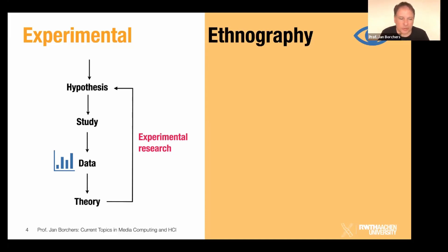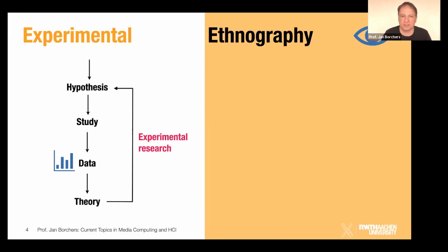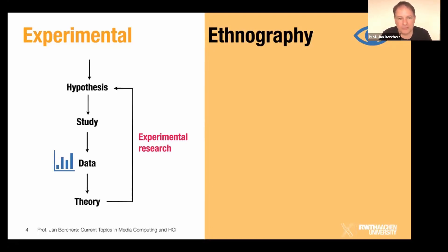That's your experimental approach — you run your study with your prototype, or maybe you don't have to build something because you're studying something that already exists. You could compare text input of two different existing keyboards, just configuring things to capture typing speed. Once you've run your study you've got data, which you analyze to confirm or reject your hypothesis and build your theory from those results.